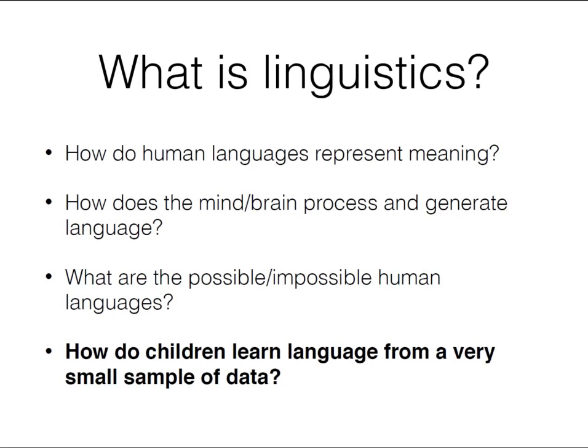How do human languages represent meaning? How does the mind or brain process and generate language? What are the possible and impossible human languages? And especially, how do children learn language from a very small sample of data? You can see that linguists are fundamentally interested in questions of learnability and representation that intersect very strongly with machine learning broadly and the specific focus of this course. They've had some really important insights that we can leverage both to improve our models and to understand what they're doing and maybe not doing.